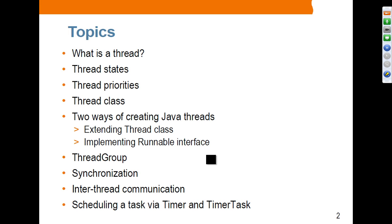We are going to see what a thread is, and we will talk about the states of thread and priorities. Then we are going to spend some time on how to create a thread class, and a big chunk of our time on creating and running a thread — how you can perform a particular chunk of task using a thread. We will also talk about thread groups, synchronization, how multiple threads can communicate with each other, and how to use Timer and TimerTask classes.